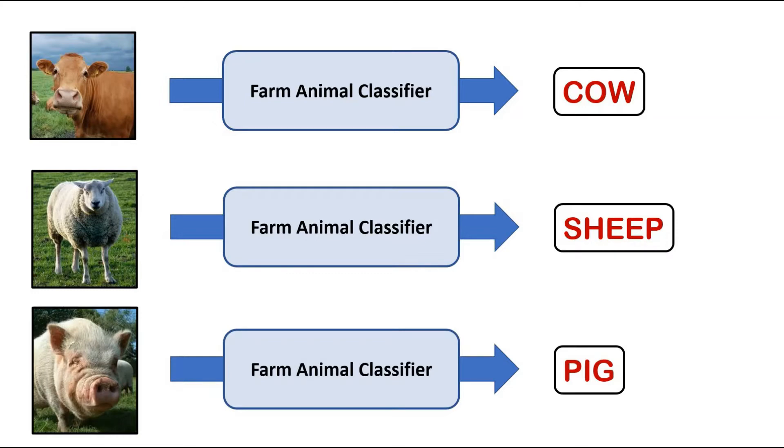For the sake of this example, let's say the model is trained such that it only is able to classify images for these three farm animals: cows, sheep, and pigs.